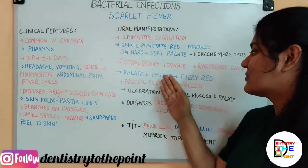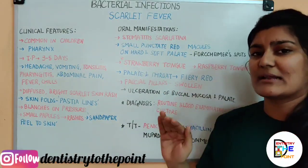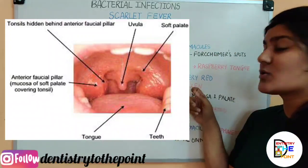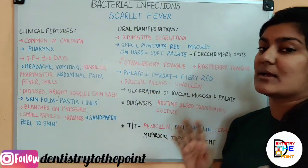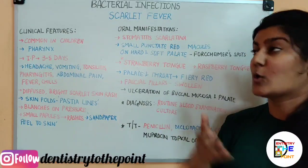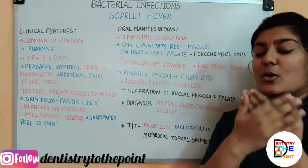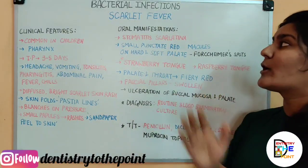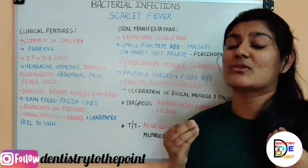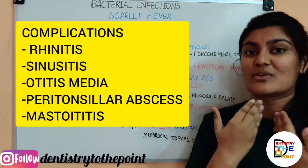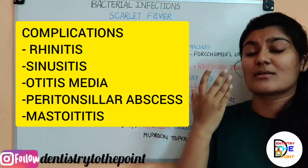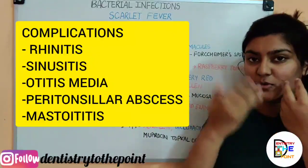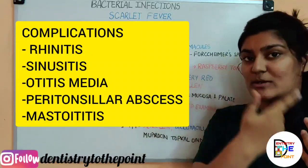The palate and the throat are fiery red in colour, and the faucial pillars are also swollen. There can also be ulcerations of the buccal mucosa and the palate if there is any secondary infection. Scarlet fever can also have complications, as it involves the entire oral cavity and surrounding structures. These complications include otitis media, peritonsillar abscess, rhinitis, and sinusitis, as the infection can spread to adjacent structures.